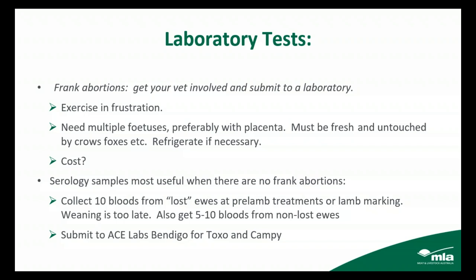Serology samples from blood are really useful when there are no frank abortions but you've noticed a large difference between what has been scanned in lamb and what you've marked, or you're finding lots of apparently empty ewes. We need to collect at least 10 blood samples at pre-lamb treatments or lamb marking — if you leave it much later, sometimes the levels in the blood go down and we won't get an answer. I routinely recommend also getting five to ten bloods from ewes that have got lambs at foot to check for background issues. The place to send them is Ace Laboratories in Bendigo for Toxoplasma and Campylobacter, because they're leading the charge in this sort of work.